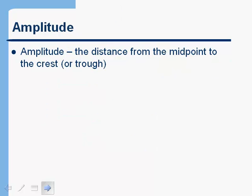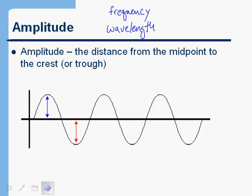So we've looked at frequency and wavelength as two properties of a wave. Another important property is amplitude. The amplitude of a wave is simply how big it is. When I shake a slinky just a little bit side to side, it has a small amplitude; if I shake it in a very large way, it has a large amplitude. The amplitude is the distance from the midpoint of the wave to the top of the crest, or from the midpoint down to the trough.